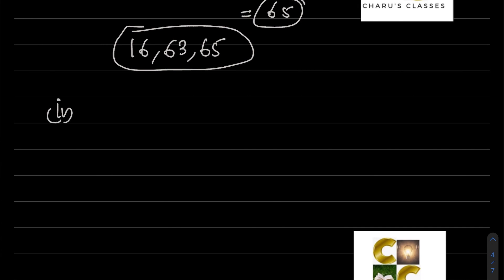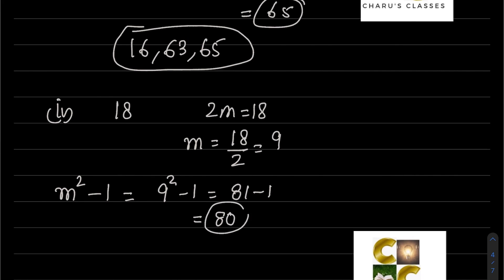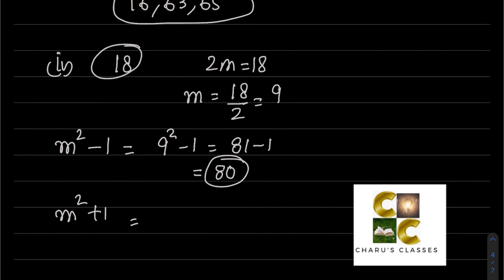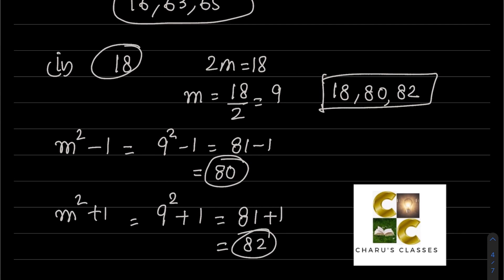Fourth part: Here the Pythagorean triplet given is 18. So we will assume 2m equals 18, meaning m will be 18 divided by 2, that is 9. m squared minus 1 - this will be 9 squared minus 1. 9 squared is 9 into 9, which is 81. So 81 minus 1 - our next triplet is 80. And m squared plus 1, so 9 squared plus 1. 9 into 9 is 81, plus 1. So the next triplet is 82. So our three Pythagorean triplets are 18, 80, and 82. If you like the video, please like, share, and subscribe. Thank you.